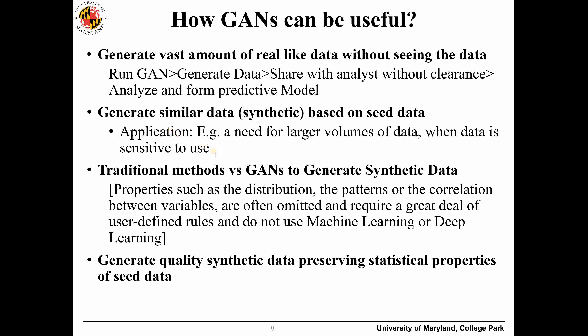GANs can solve the lack-of-data problem, which is a huge issue nowadays. We have lots of data, but after cleaning and removing garbage, we often don't get enough to build a model using traditional methods. GANs can also solve data issues like missing values, error values, and format issues. Traditionally we use mean, median, and other aggregation functions, but GANs are machine learning based, more efficient, and take into consideration correlations between variables as well as inherent statistical distributions.